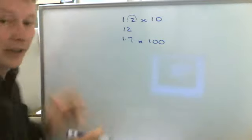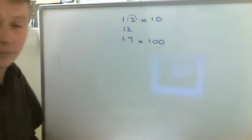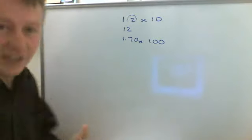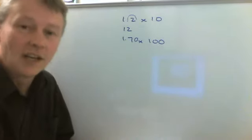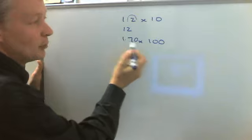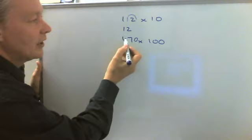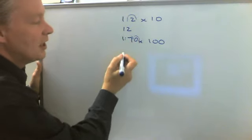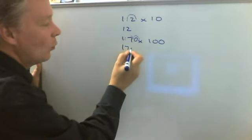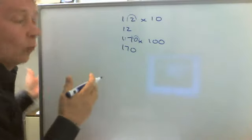Okay, so let's say we had 1.7 multiplied by 100. Well, the only thing we need to remember is that we're making two jumps and therefore we need to just put a placeholder, a zero in place, in order to make sure that we can perform the calculation. And then we move the decimal point by two jumps because there's two zeros after the 100. So one jump and two jumps. So the answer to 1.7 multiplied by 100 would be 170.